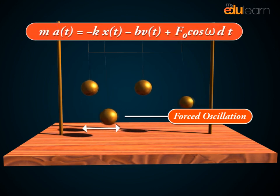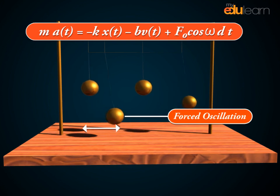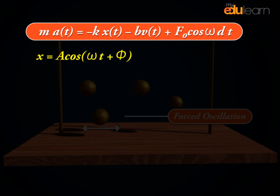At this time, when the system is in a steady state, the solution of above equation is X equals A cos omega t plus phi.